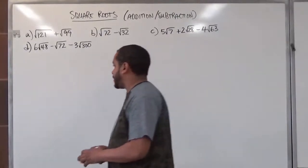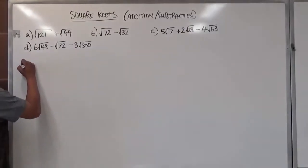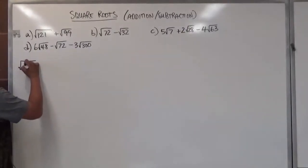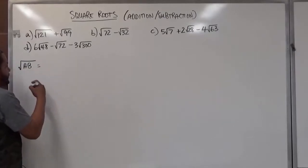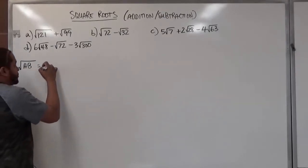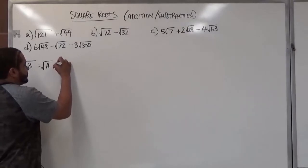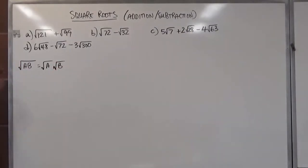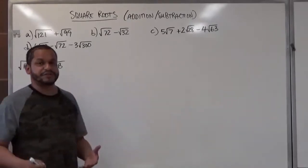The first thing we want to understand is that the product of any two numbers — considering that the product is A times B — we can separate these into separate square roots: the square root of A times the square root of B. In this case, our A term is always going to be a perfect square, and our B term is an imperfect square.